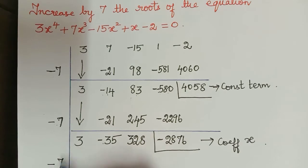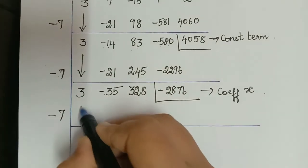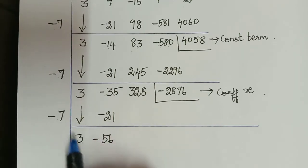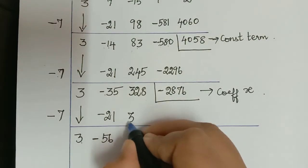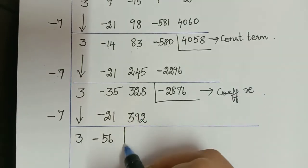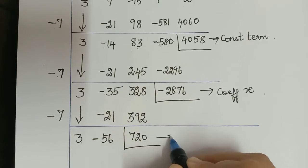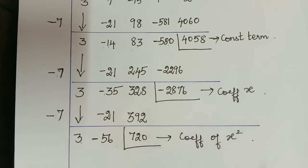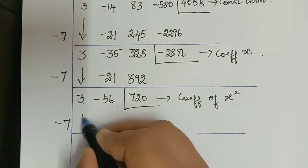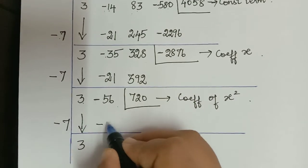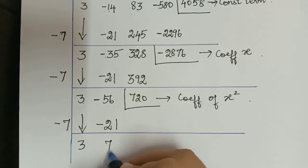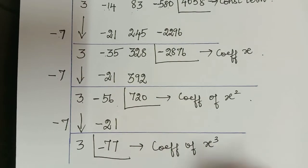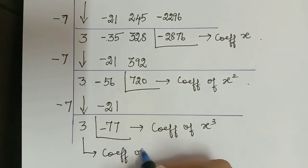Again we divide by negative 7. This 3 comes down, 3 multiplied with negative 7 is negative 21, and addition of these two is negative 56. Then minus into minus is plus, 7 multiplied with 56 gives 392, and both being positive we add to get 720 — the coefficient of the x squared term. We continue the division: multiplying with negative 7 gives negative 21, and the addition gives negative 77, which is the coefficient of the x cubed term, while 3 is the coefficient of the x to the power 4 term.